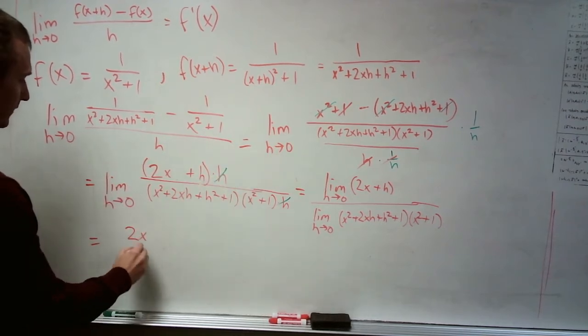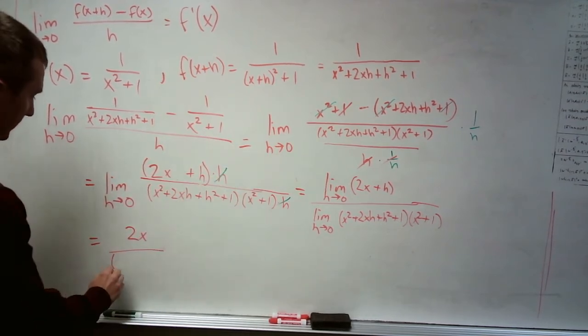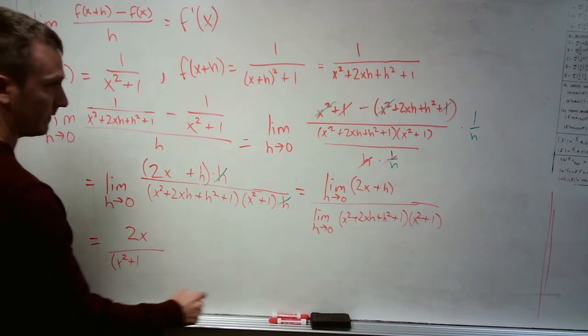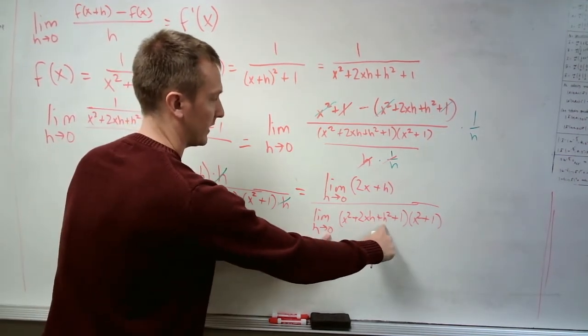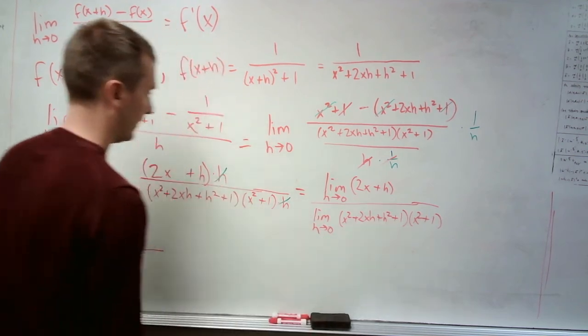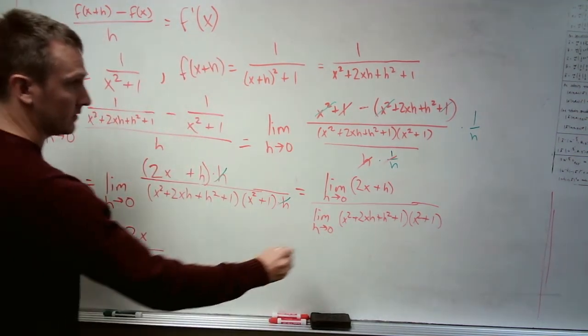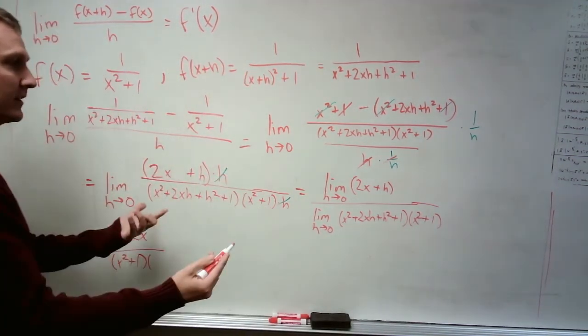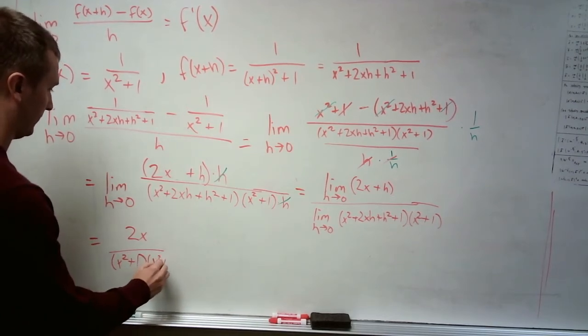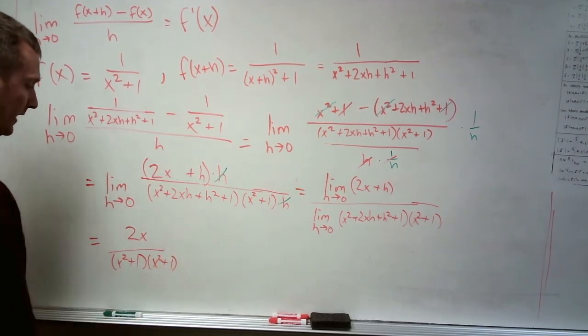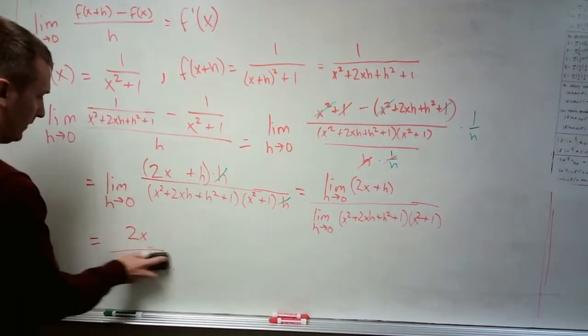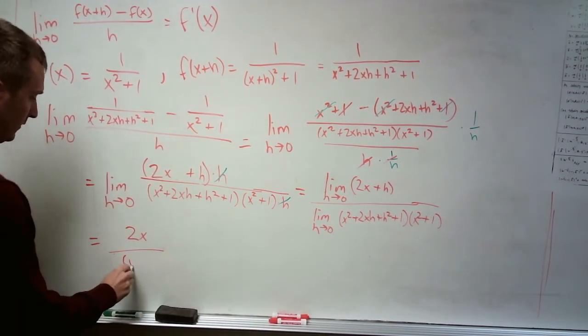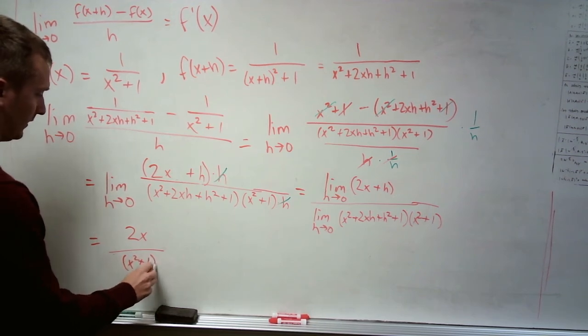And what does that give us? Up top, we get 2x. On bottom, we get x squared plus 1, because this 2x times h goes to 0, and this h squared goes to 0, times x squared plus 1, that has nothing to do with h, so it's x squared plus 1 again, which means in the denominator we have x squared plus 1 squared.